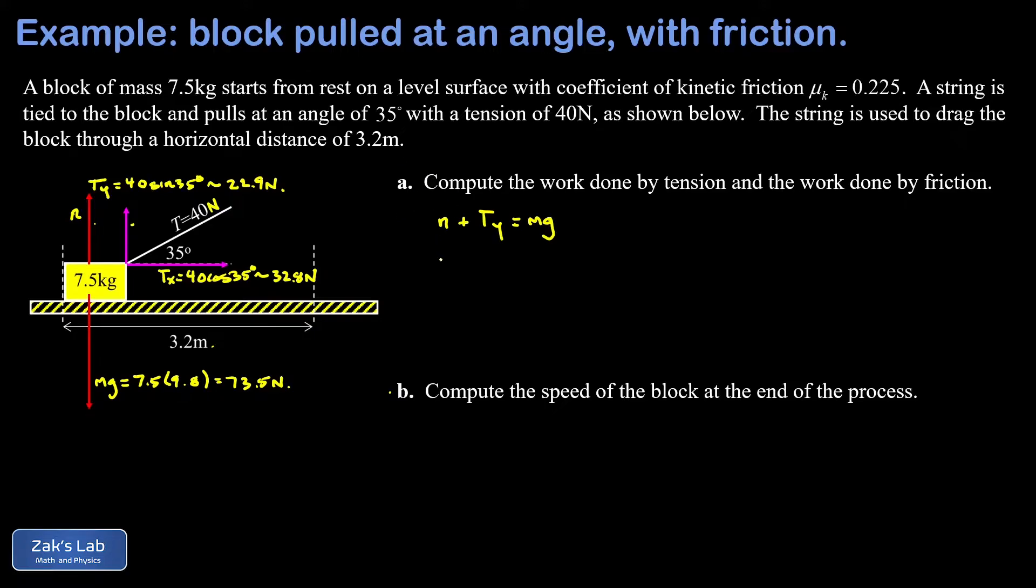I have that the normal force is mg minus the vertical component of that tension, and I plug my numbers in. That's 73.5 Newtons downward, and then my vertical component of the tension was 22.9 Newtons upward. The normal force given by the difference between them, and this gives me a normal force of 50.6 Newtons.